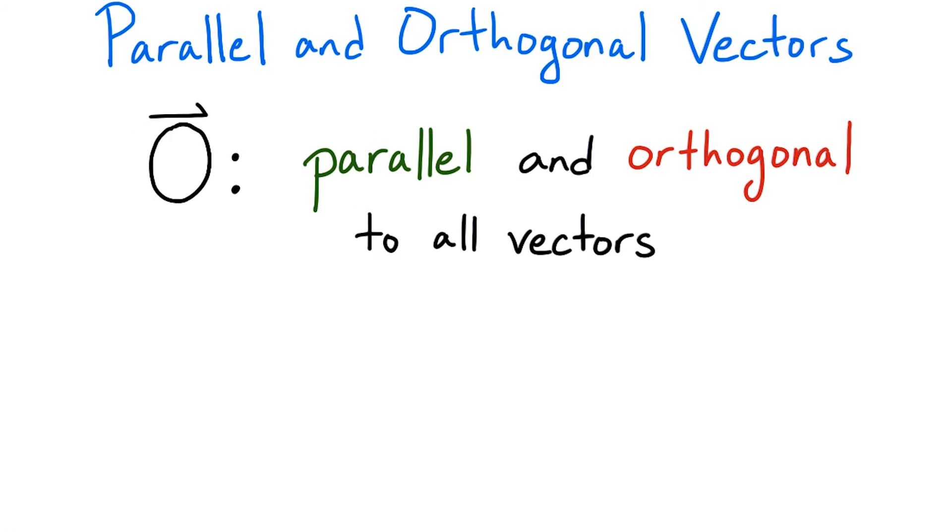An interesting fact is that the zero vector has the unique property that it is parallel and orthogonal to all other vectors. In fact, the zero vector is the only vector that is orthogonal to itself.